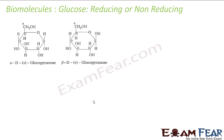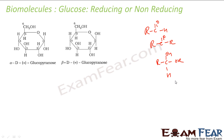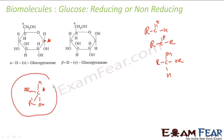Now let's discuss reducing and non-reducing sugars. To determine if glucose is a reducing sugar: if it has an aldehyde group, ketone group, or hemiacetal, it will be a reducing sugar. Looking at C1 carbon — it has one H, one OH, one OR, and one R on the other side. This is exactly the hemiacetal form, so C1 is a reducing carbon.